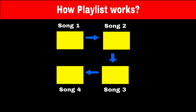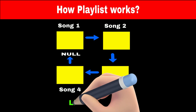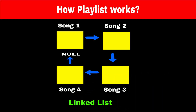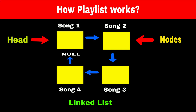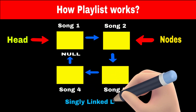Now we can access all the songs in the playlist using the first song. This data structure, where all the objects of a class are linked with other objects, is called a linked list, and all the objects linked together are called nodes. The first node, which helps us traverse the entire list, is called the head node. The last node in the list will point to null. Since every node points to a single next node, this linked list is called a singly linked list.